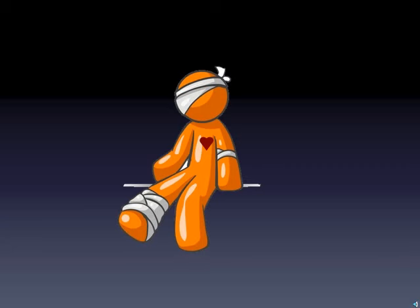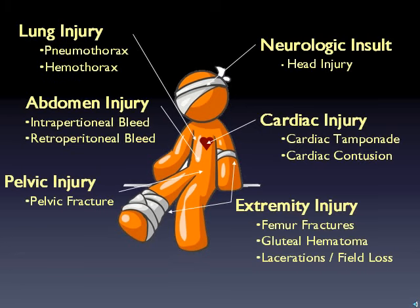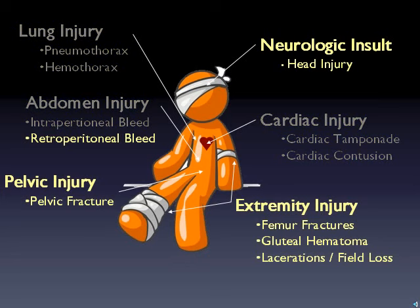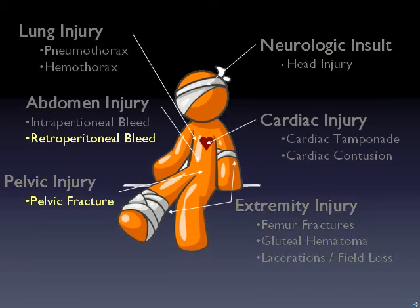Why is the eFAST important? Within minutes, this exam prioritizes the broad differential posed by an unstable trauma. For instance, take a negative eFAST. A negative eFAST cuts this list in half, leaving four things that can often be prioritized using other physical exam findings, often limiting the list to just two: pelvic fracture or retroperitoneal bleed. What do they have in common? Angio. Powerful — all while the team is situating the patient as EMS gives report.